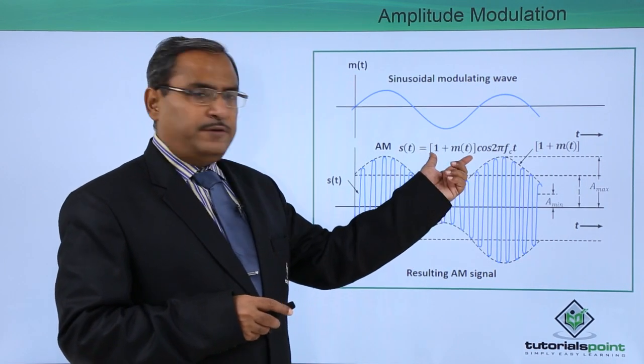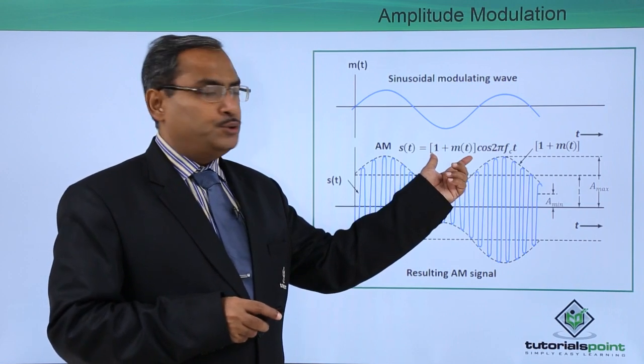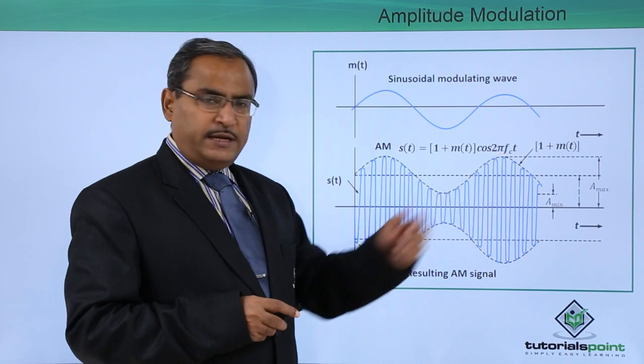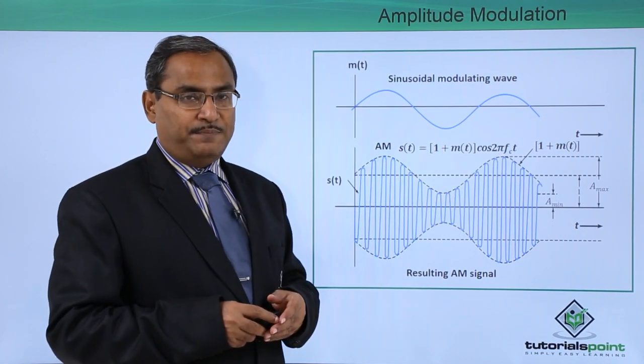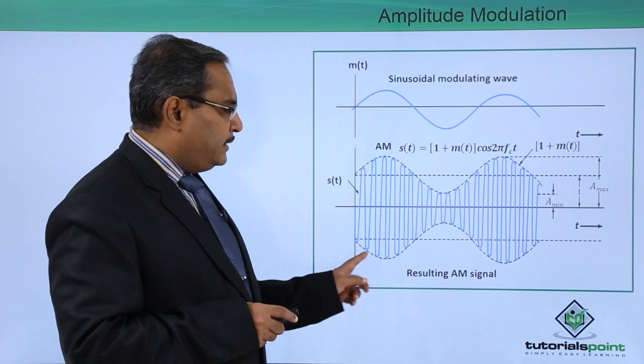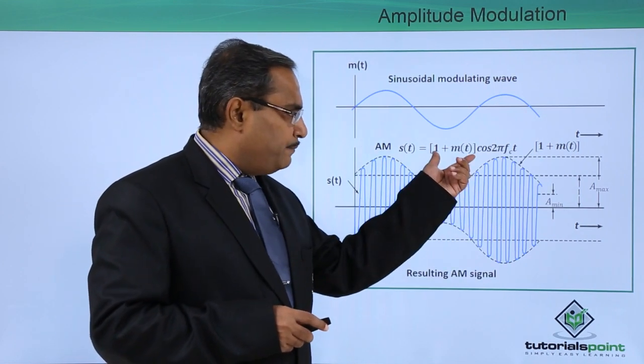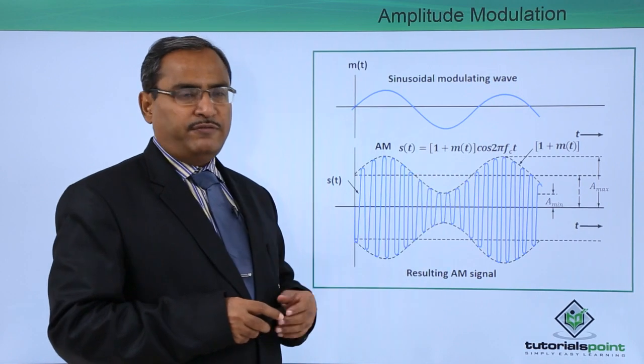Now, this 1 plus m(t) has become the amplitude of another signal, where the carrier frequency is fc and which is a very high frequency. You can find that this carrier frequency will get enveloped in between this 1 plus m(t).